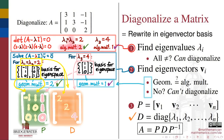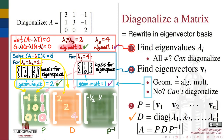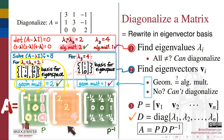To complete the factorization, we find P inverse using row reduction or any available technology, and then verify by multiplying out that P times D times P inverse does indeed give us back the original matrix A.